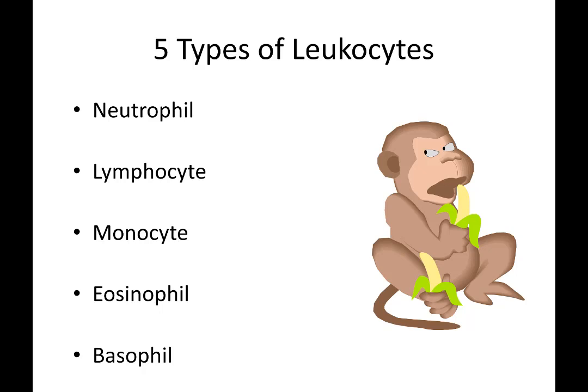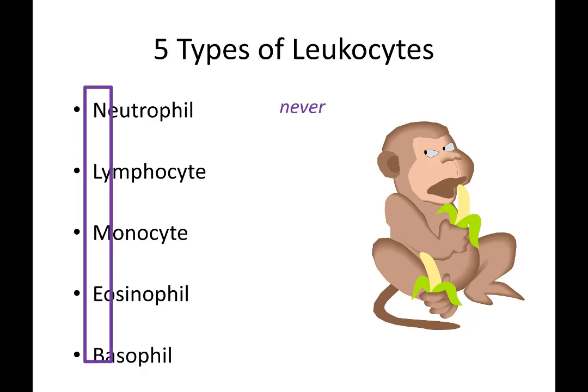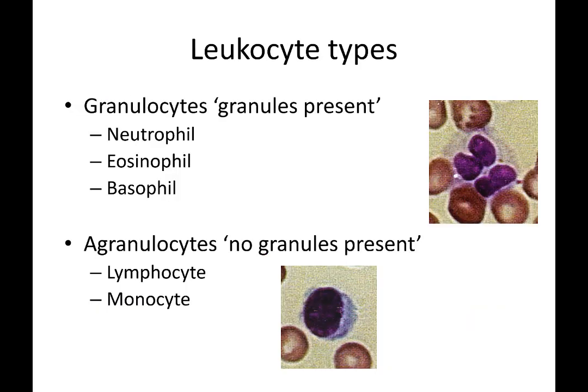A quick way to remember the order from most to least numerous in the blood is the phrase 'never let monkeys eat bananas,' which gives us the order from greatest to least. The types of leukocytes fall into two big groups: granulocytes, where there are dots inside the cell, or agranulocytes — the letter A denotes absent — so they will have no granules.